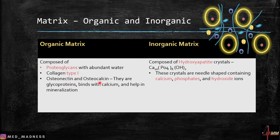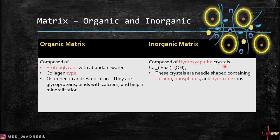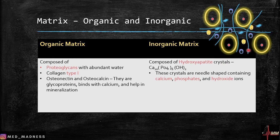Osteonectin and osteocalcin are glycoproteins that bind to calcium and help in mineralization. So the organic matrix is composed of proteoglycans, collagen type one, and the glycoproteins osteonectin and osteocalcin. The inorganic matrix is very important for giving hardness to the bone. It contains hydroxyapatite crystals, which are needle-shaped crystals containing calcium phosphates and hydroxide ions.